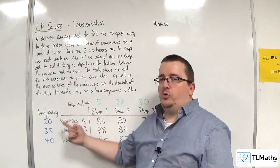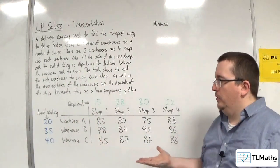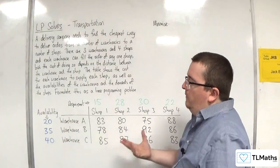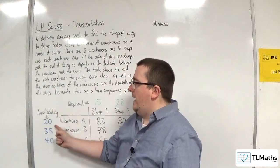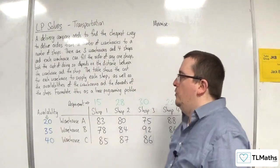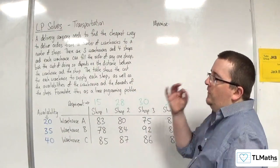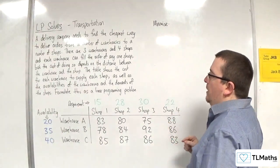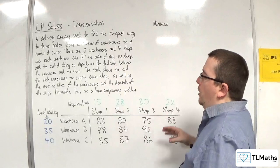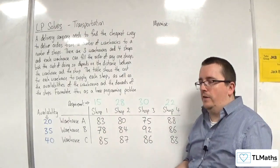Warehouse A has 20 units available. Warehouse B has 35. Warehouse C has 40. Now, the total availability here adds up to 95, and that is exactly the same as the amount that is required. Just to be clear, the amount that's required by the shops is precisely what we have available.